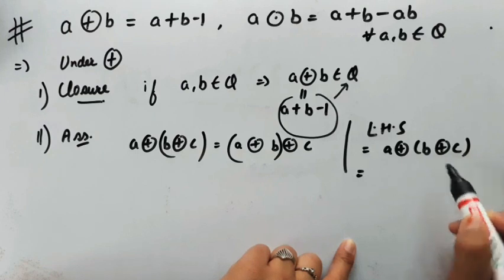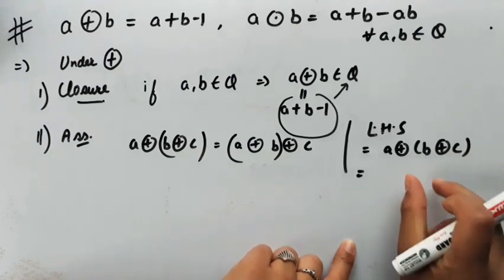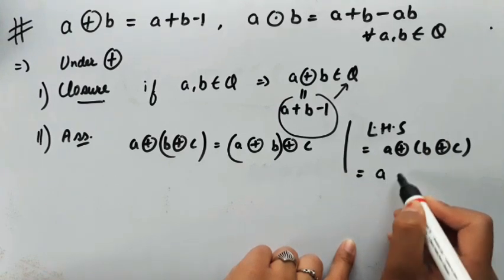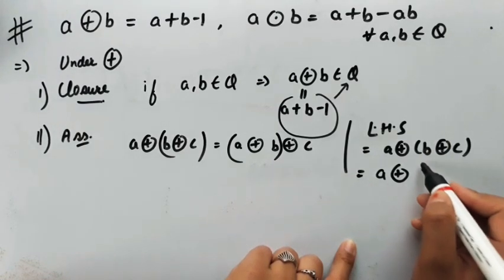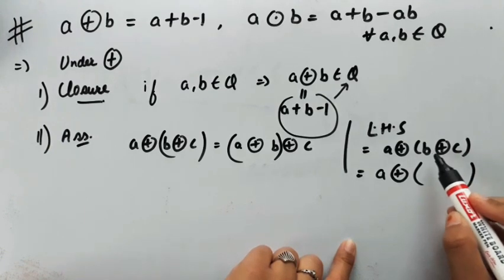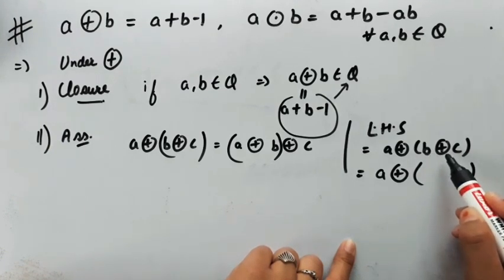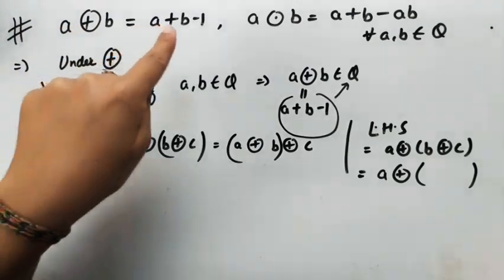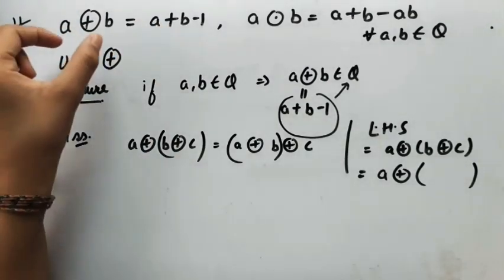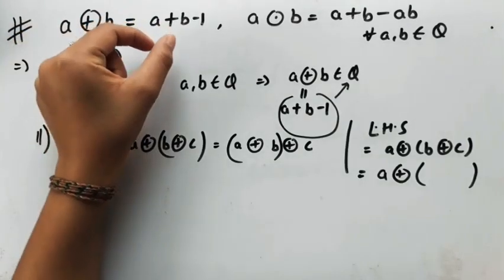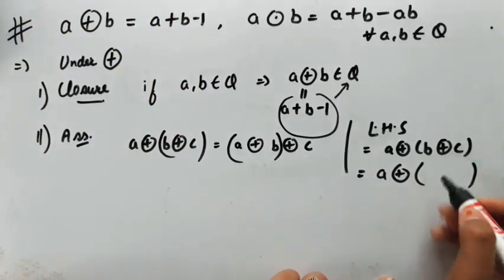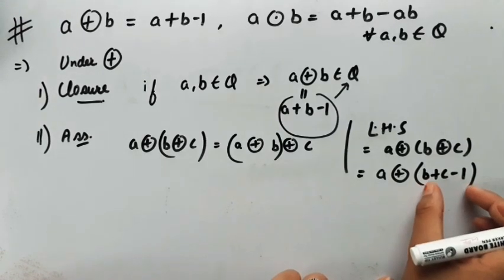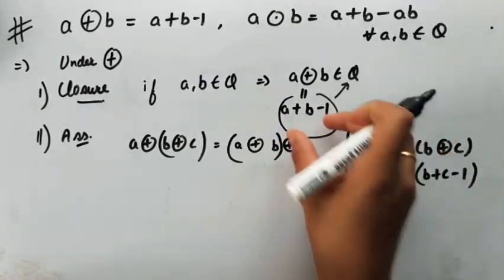When solving these expressions, we always solve the bracket first. We apply the composition definition: a⊕b = a+b-1. So for two elements, we add them and subtract 1. Using the closure property, this gives us a new element in Q. We then apply the composition again: add them and subtract 1.